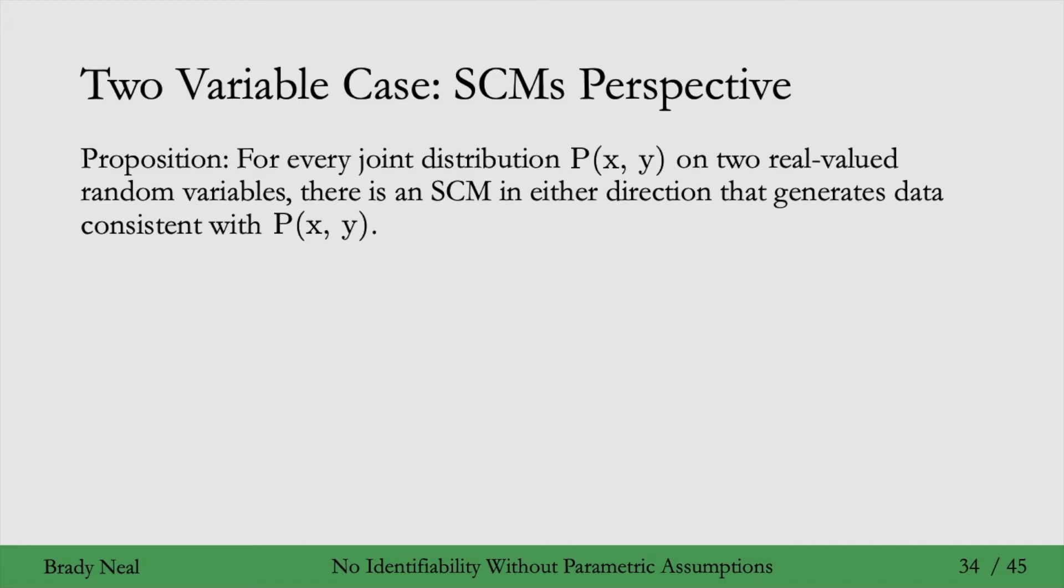In other words, an SCM where X is generated from Y could have generated the data, or an SCM where Y is generated from X could have generated the data. So we don't know which variable was generated from which. We can't distinguish between those two causal graphs.